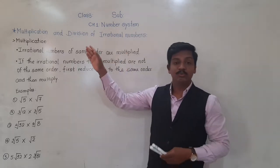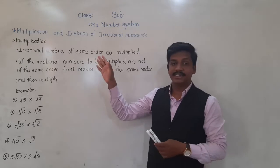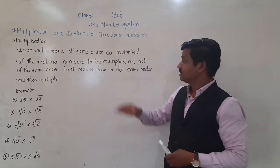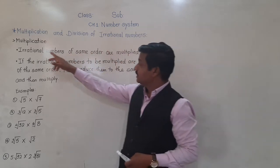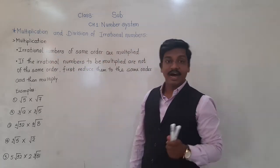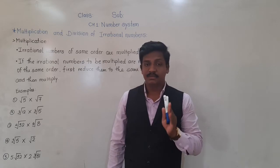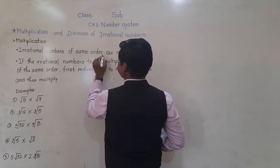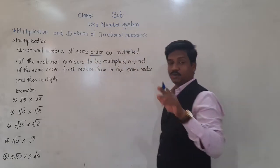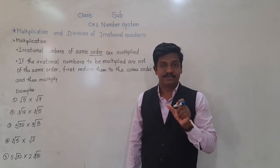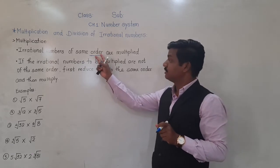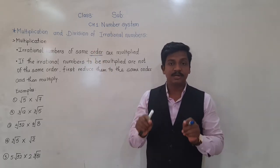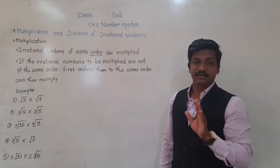Let us see how to multiply first — how to multiply the irrational numbers, or which irrational numbers can be multiplied. The first rule is: irrational numbers of same order are multiplied. Here the word 'order' is important. As in addition the word 'irrational factor' was important, similarly here in multiplication the word 'order' is important.